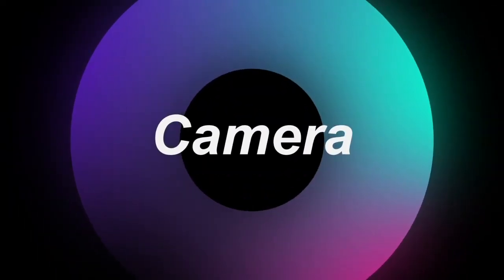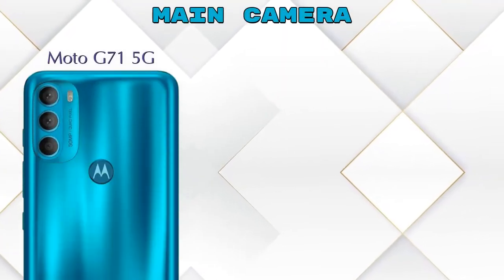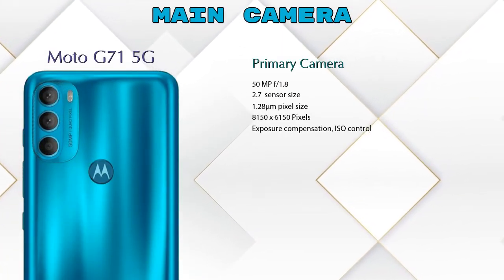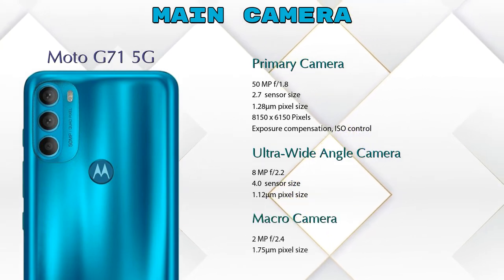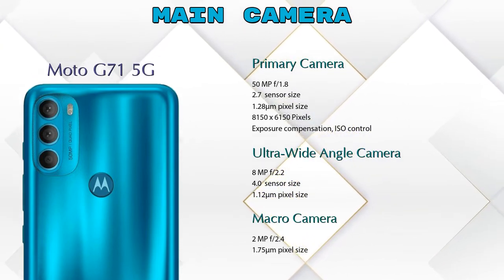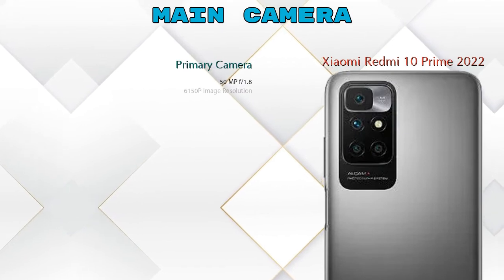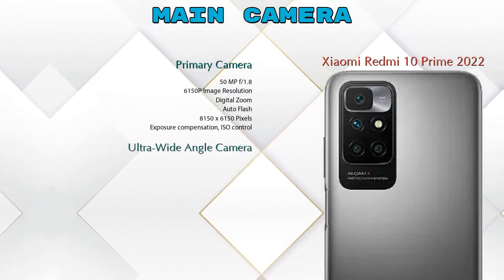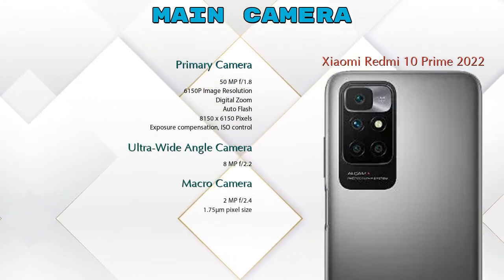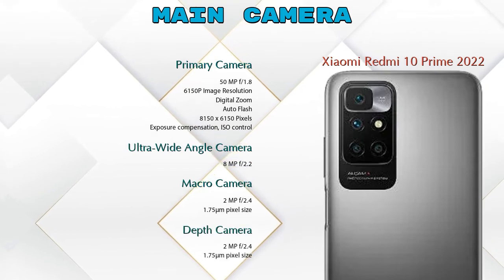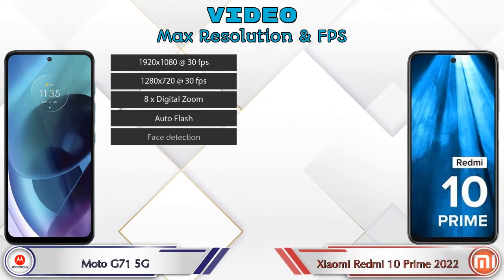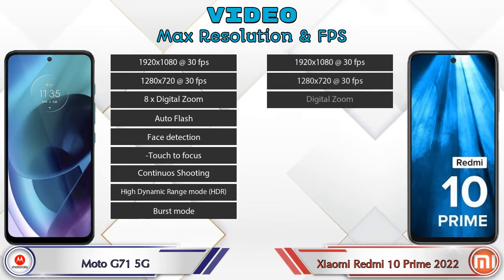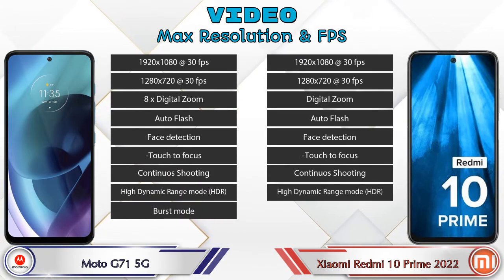Now let's look at the camera details. For the rear camera, the G71 5G has three cameras: a primary camera, an ultra-wide angle camera, and a macro camera. The 10 Prime 2022 has four cameras: a primary camera, an ultra-wide angle camera, a macro camera, and a depth camera. For video features, the G71 5G has 9 and the 10 Prime 2022 has 8 different types of features available.